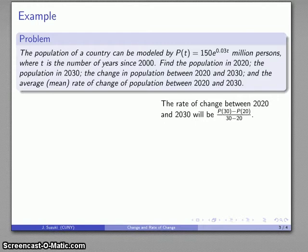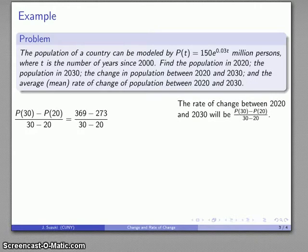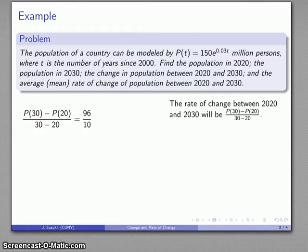Finally, the rate of change is just the ratio of the changes: P(30) minus P(20) over 30 minus 20. I can fill in my numbers there. P(30) is 369, P(20) is 273, 30 minus 20. That's just a computation, 96 over 10. 9.6 is the numerical value. The units are millions of persons, which is what our numerator is measured in, over years, which is what our t values are measured in. So this is measured in millions of persons per year. That's all the calculus to finding average rates of change.